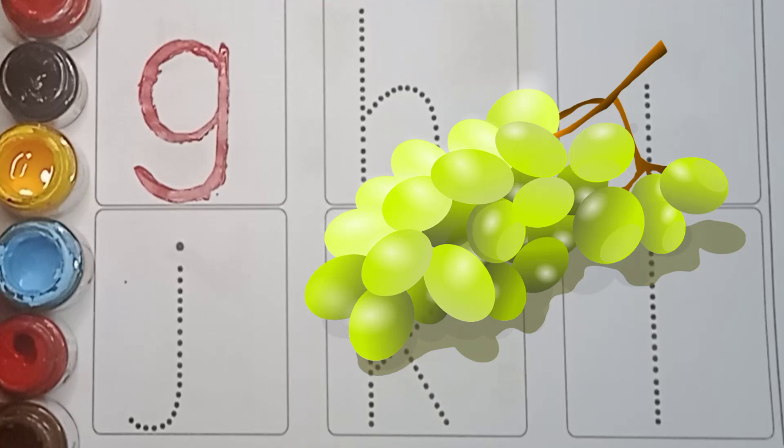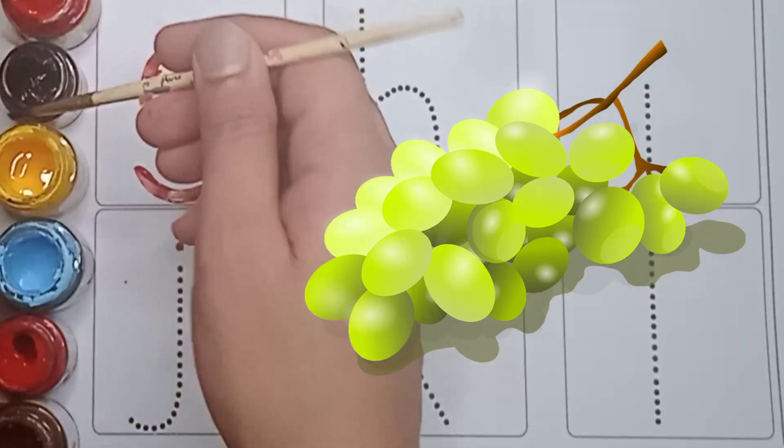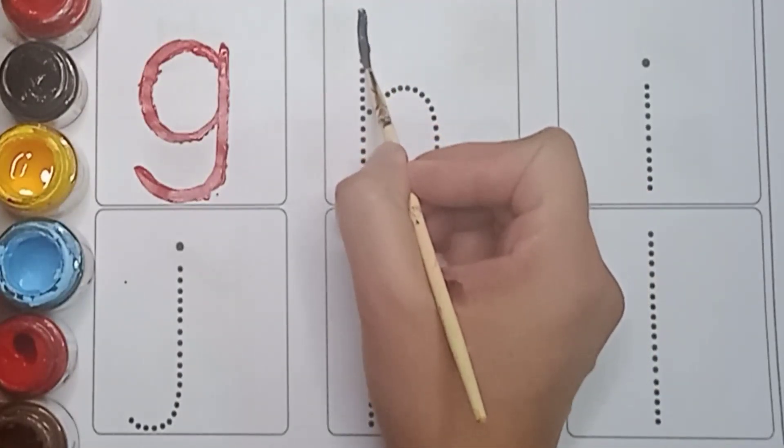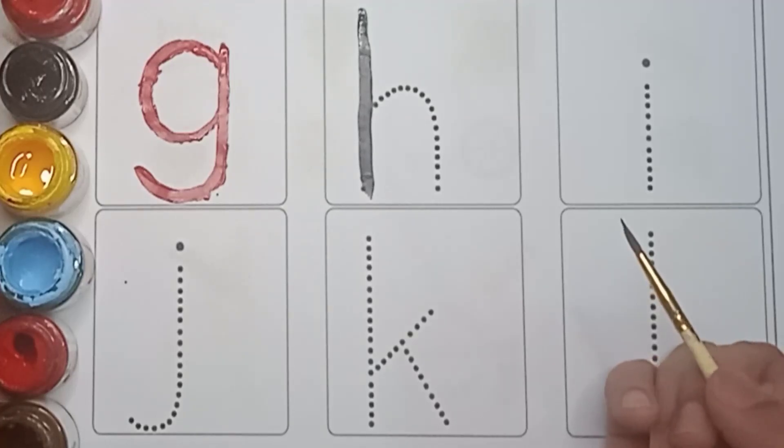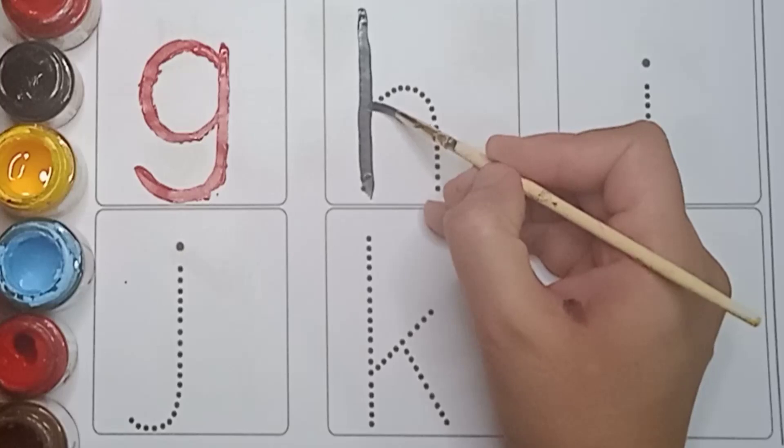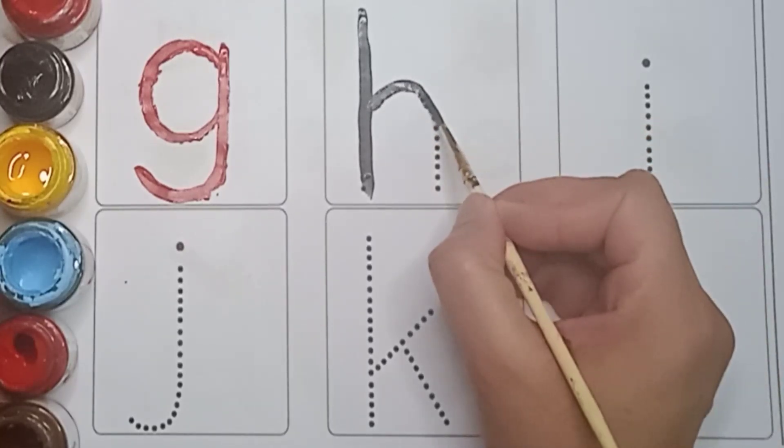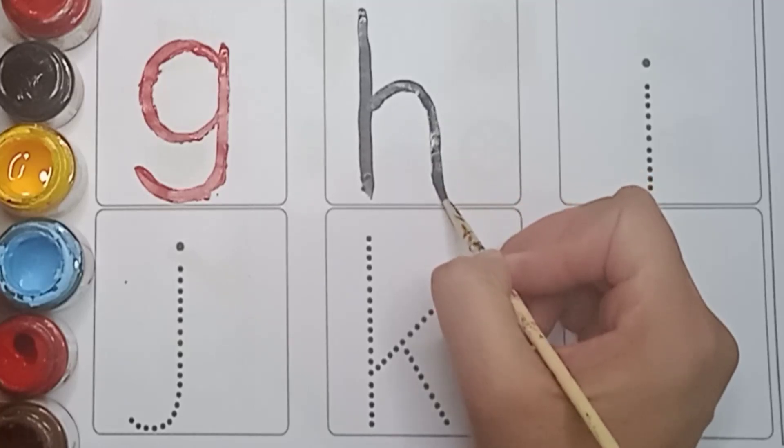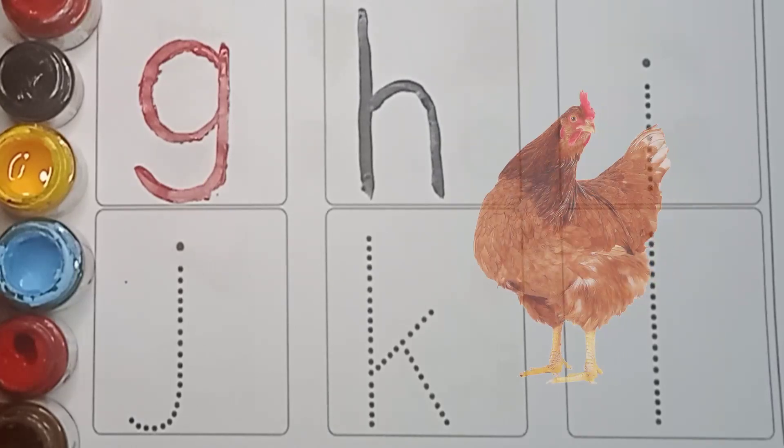H. Next letter is H. Black color. H. First make a standing line. And now make a mountain. Like this. And standing line. It's H. H is for Hen. H is for Hen.